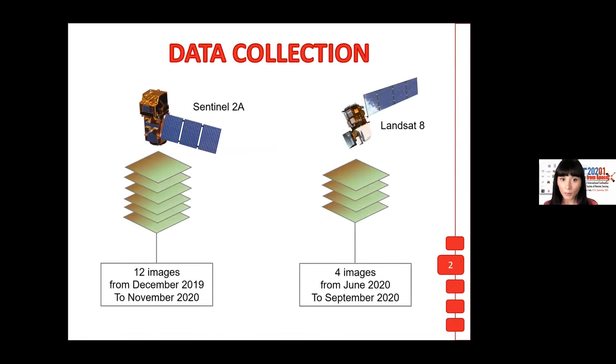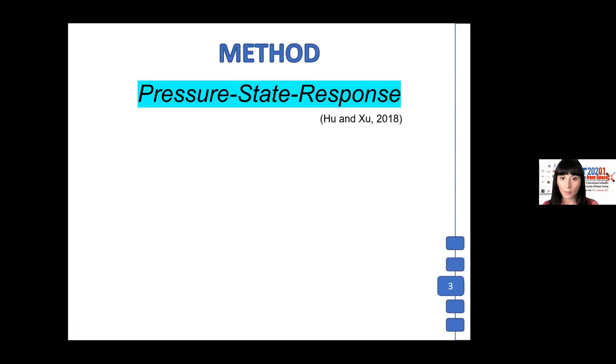The input data were derived from two different types of sensors. We have downloaded 12 Sentinel-2 images from December 2019 to November 2020, and four Landsat 8 images from June to September 2020.